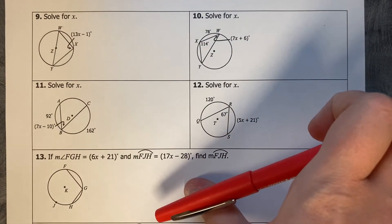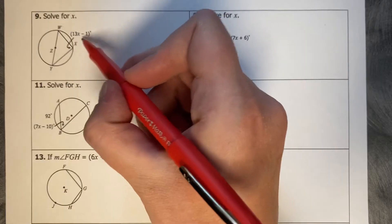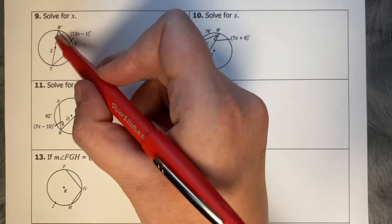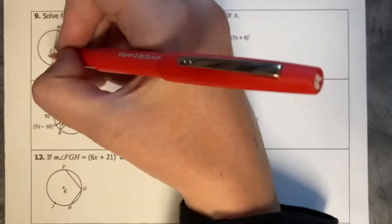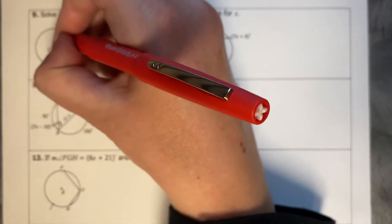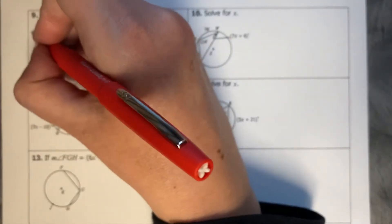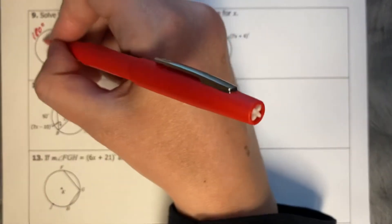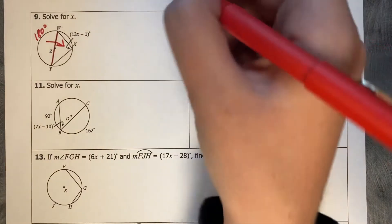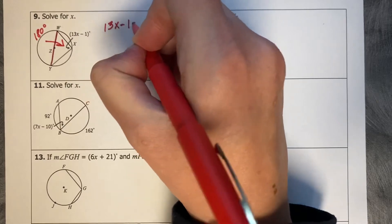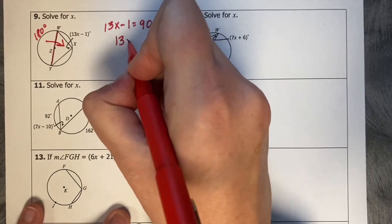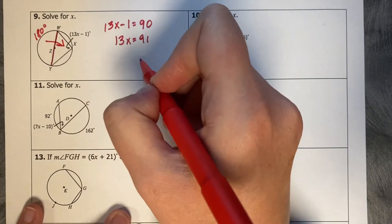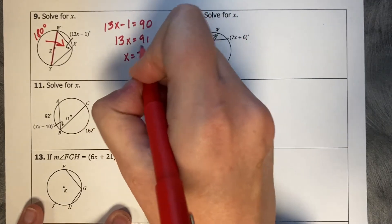All right, solve for X. I can see that 13X minus 1 is inside of an inscribed angle that corresponds to a diameter. So if this YW is a diameter, then this is 180 degrees, and when you divide it in half, it's going to be 90. So 13X minus 1 equals 90, plus 1, 13X equals 91, divide by 13, and X equals 7.